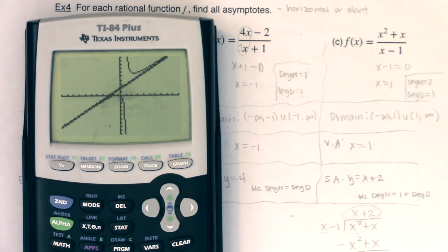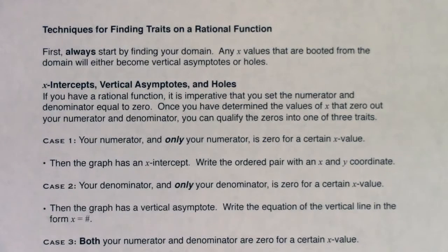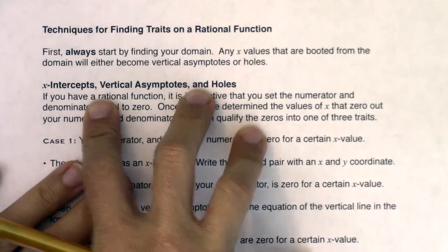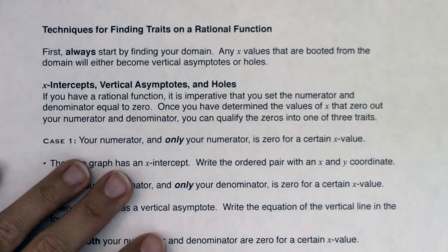We've got our looks at horizontal, slant, and vertical asymptotes. I'm going to summarize it in a bit, and we're going to take a look at two of your basic functions, then start graphing. Finding traits of rational functions can prove to be particularly tricky, so I want to give you some techniques and guidelines. We've discussed all of these already, but I wanted to summarize them on one page.